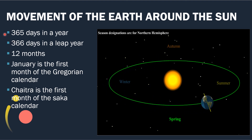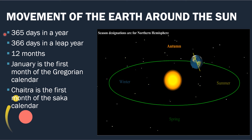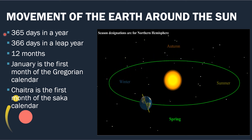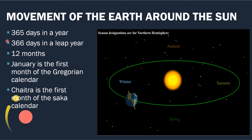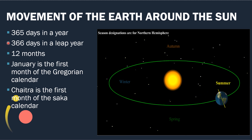Both calendars have 365 days in a year. Some years have 366 days. Do you know what a leap year is?